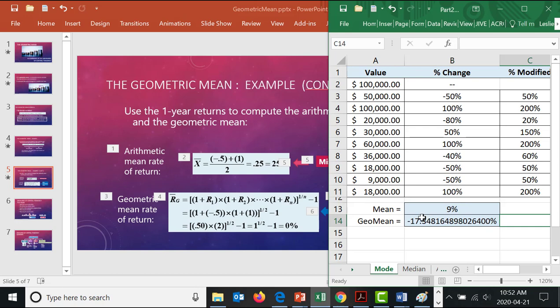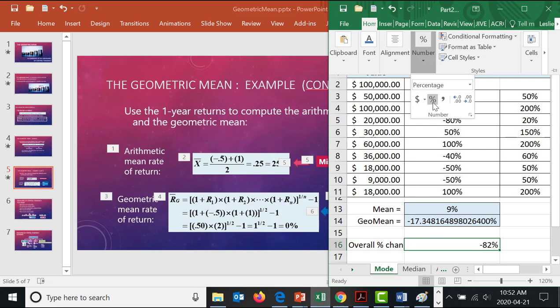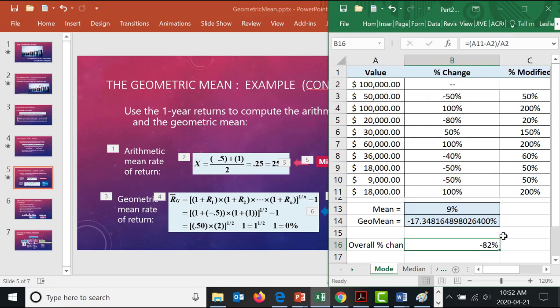Now, the 17% isn't actually how much we dropped in value from the start to the end. It's actually much, much larger of a drop than that. To go from 100,000 down to 18,000, again, we could do that overall, so percent change. We could do that same new minus old divided by old formula for it. The overall percent change is actually much larger of a drop than that. It is, oh, and let's format that to a percentage. Okay, it's actually an 82% drop in our money.